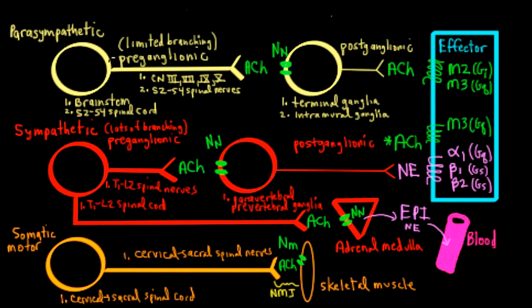The cell bodies of the preganglionic parasympathetic neurons are found in two locations: the brain stem, which is comprised of the midbrain, pons, and medulla, and the bottom part of the spinal cord called the sacral spinal cord, specifically sacral segments two, three, and four.